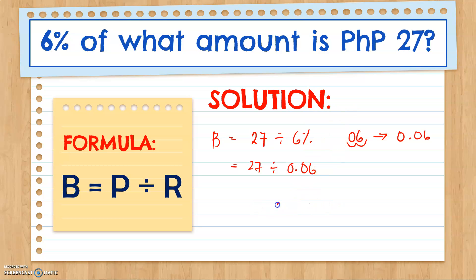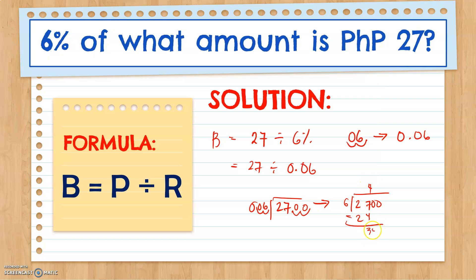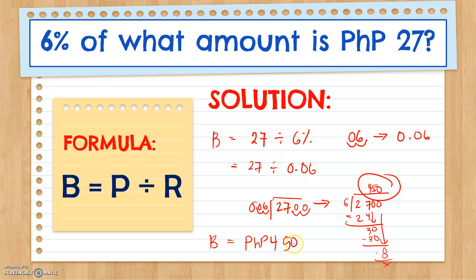In dividing, the divisor should be a whole number, so we move the decimal point twice to the right. We also move the decimal point of the dividend twice to the right. Our new numbers are 2,700 divided by 6. Dividing: we get 450 as our answer. Therefore, 27 pesos is 6% of 450 pesos.